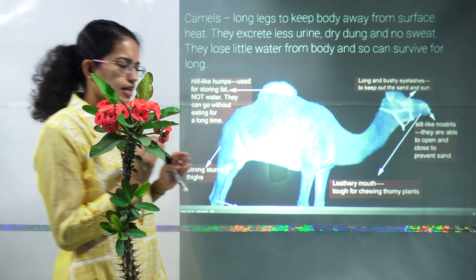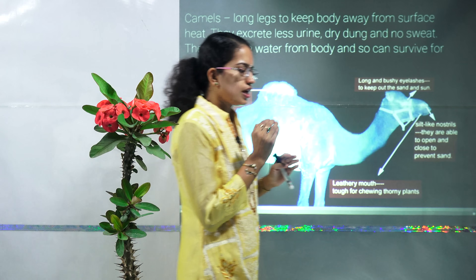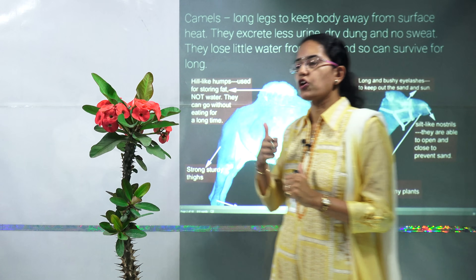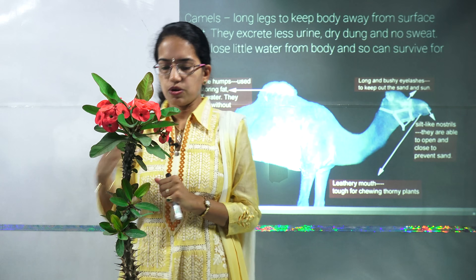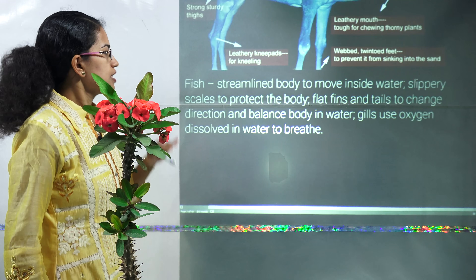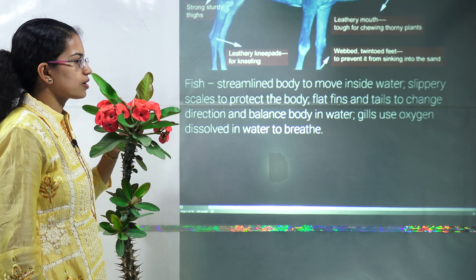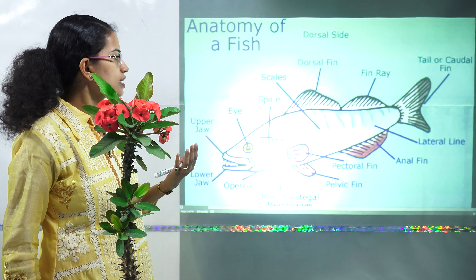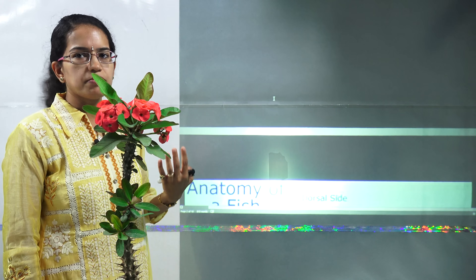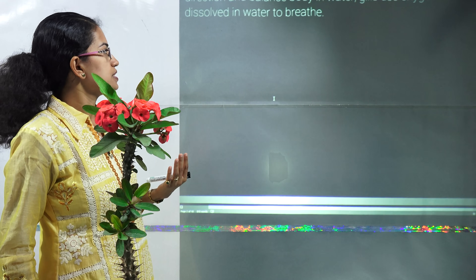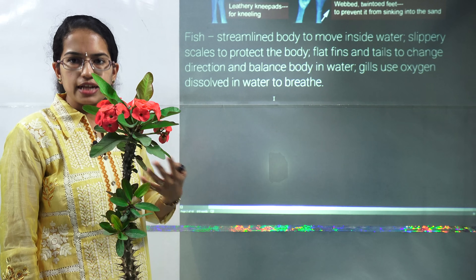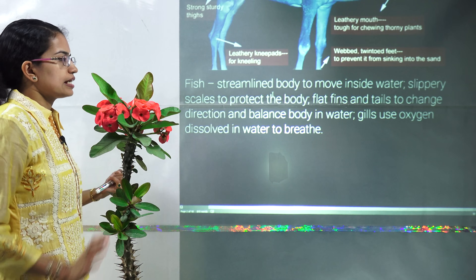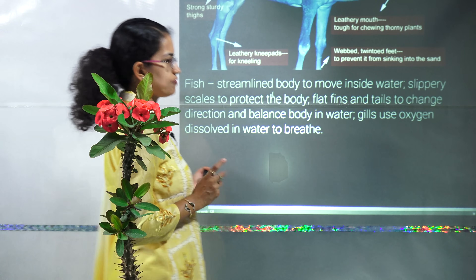Other modifications in a desert atmosphere are seen in rats. Rats burrow holes to live in, providing a cold environment, making survival much easier for animals like rats and snakes.